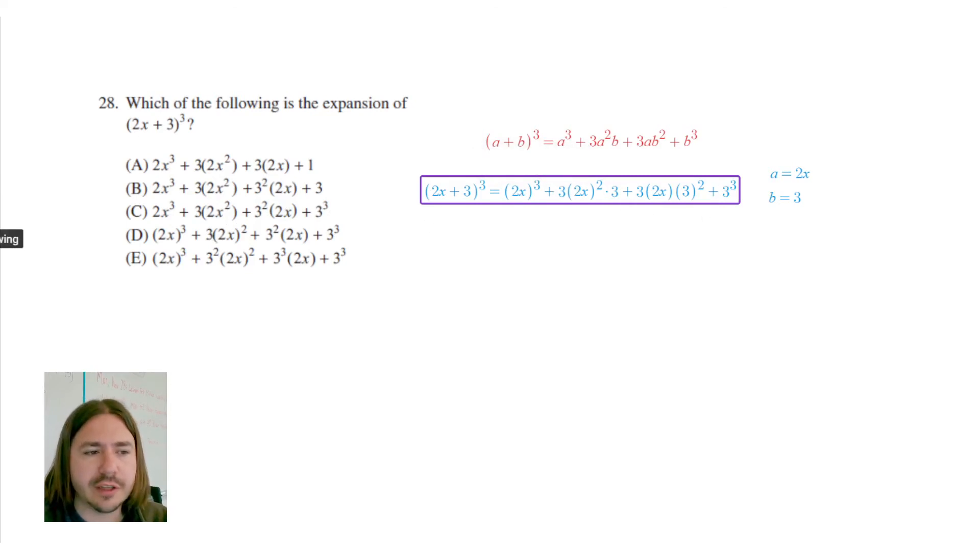So we'll just go through and see which answer looks right. So first thing I'm noticing here is that the constant term here is 3 cubed, and we see that in choices c, d, and e, but not b or a. It's definitely not 1, and it's definitely not just a 3. It's 3 cubed. So it can't be a or b.